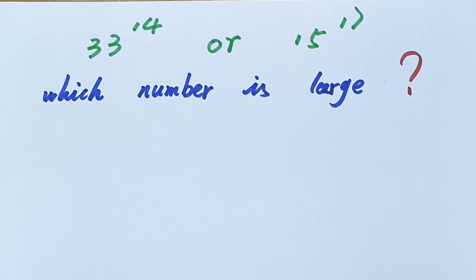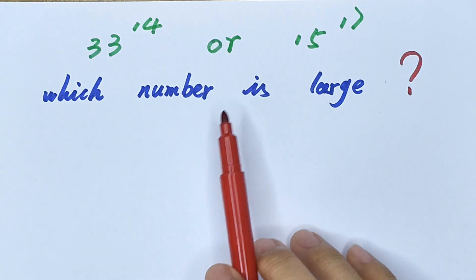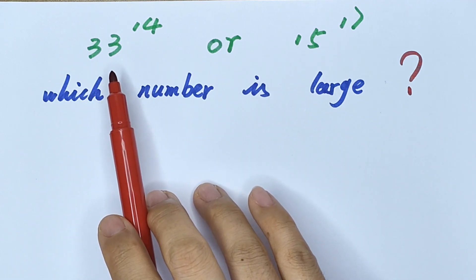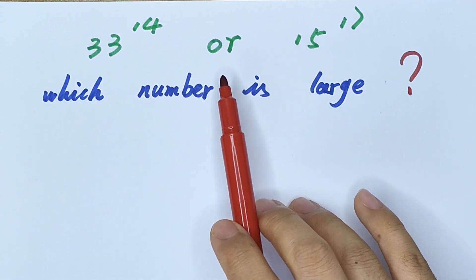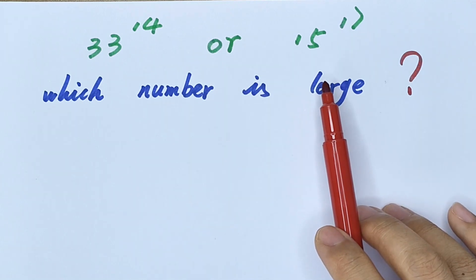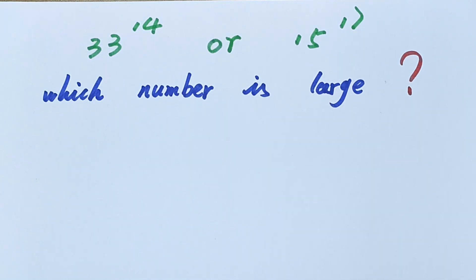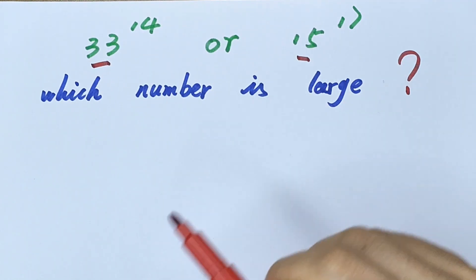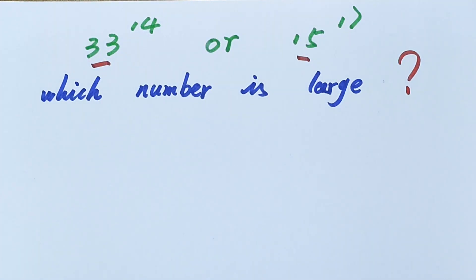Hello everyone. In this video we are going to be comparing two numbers: 32 to the power of 14 and 16 to the power of 17. We are going to figure out which number is larger. Because we have different bases, we will convert to a unified base.